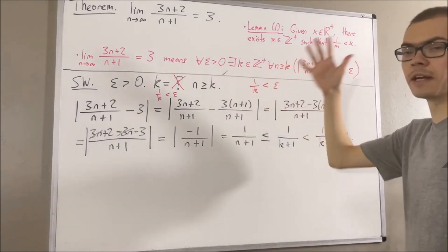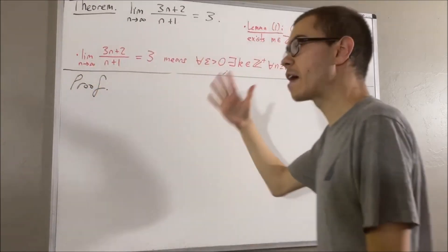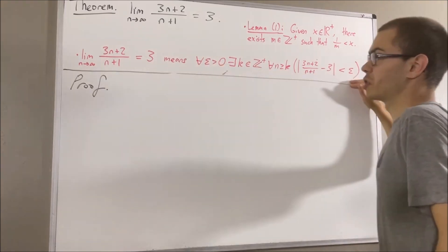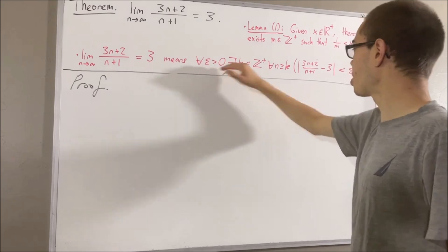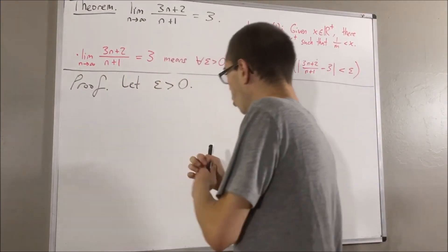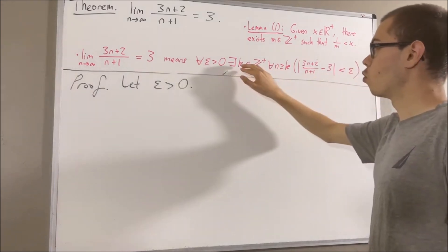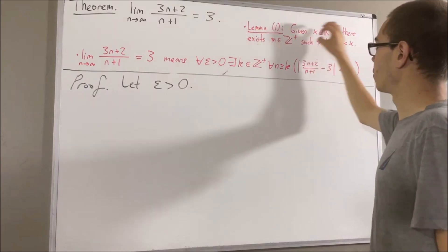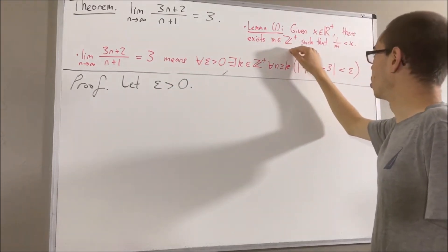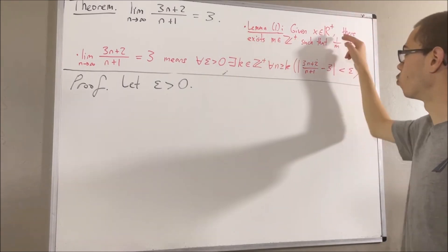We have an outline for our proof, so let's actually write it up. In the proof, all we have to do is show that this statement is true — once we show that, we're done. Since we're trying to prove a statement about every epsilon greater than 0, give me an arbitrary epsilon greater than 0. From here, we want to find a positive integer k which makes this statement turn out true. In our scratch work, we chose k using Lemma 1, so let's apply Lemma 1 right now. Taking x to be epsilon, we see that there is at least one positive integer which satisfies this inequality for x equals epsilon. We'll call that positive integer k, so we have that 1 over k is less than epsilon.